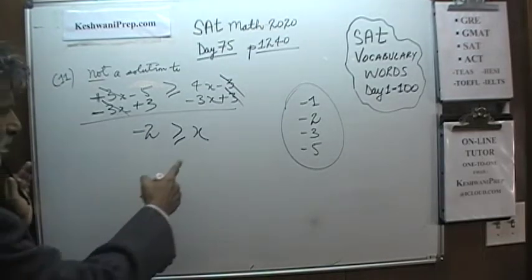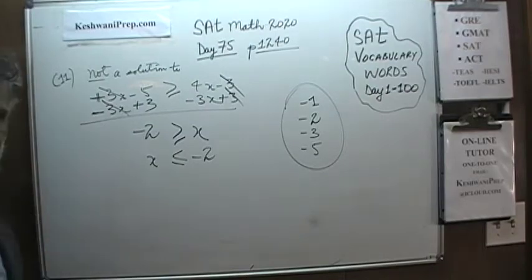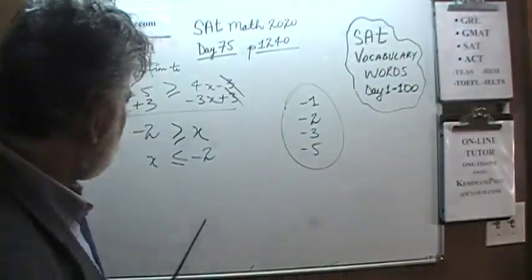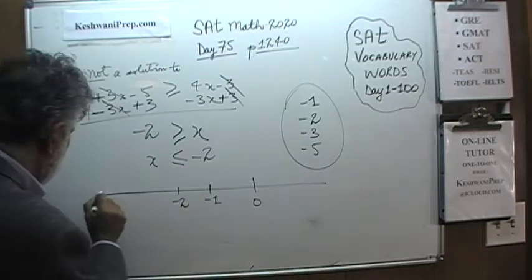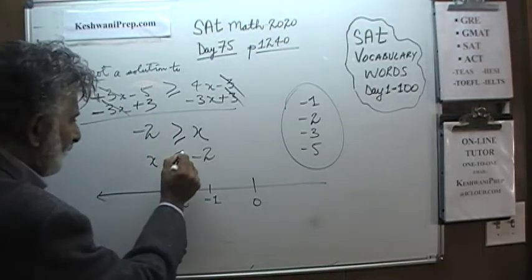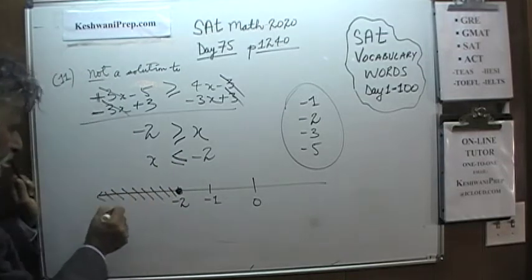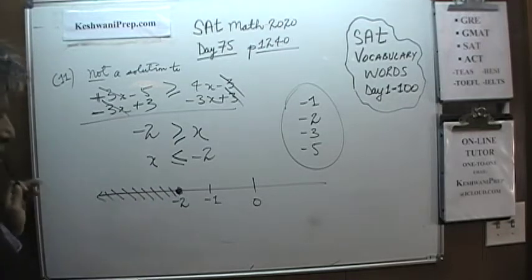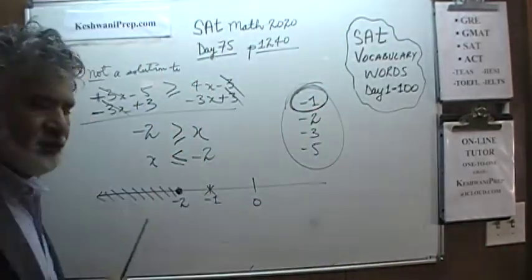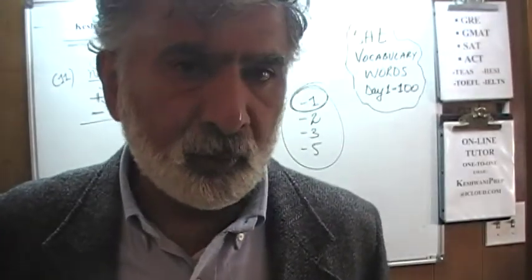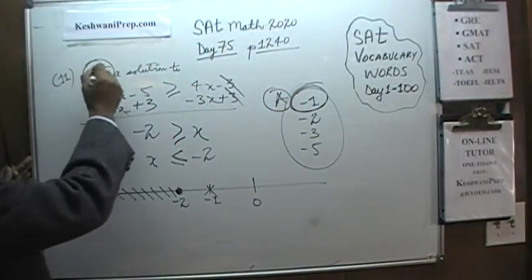We cannot leave it like this. We bring x to this side, which is the same as saying x is less than or equal to negative 2. Looking at the number line: 0, negative 1, negative 2, going on forever. x has to be less than or equal to negative 2. Anything to the left of negative 2 including negative 2 is fine, but negative 1 does not qualify because negative 1 is more than negative 2. The answer is A — A is not a solution to this inequality.